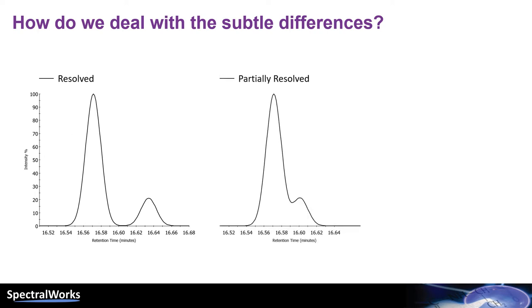What happens as the components become partially resolved? Well, depending on your peak detection algorithm, you may or may not get two components. Finally, what happens when we have unresolved data and the components are overlapping or we have partial coelution?